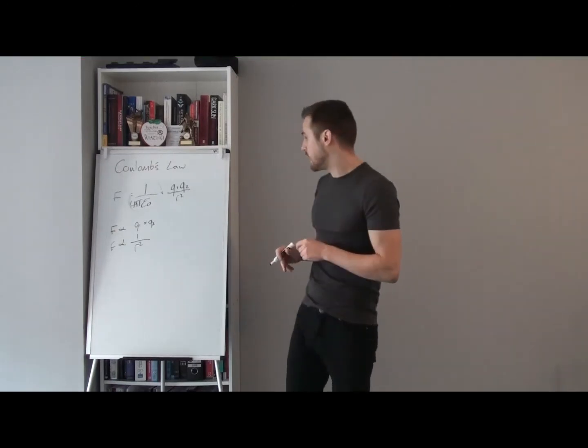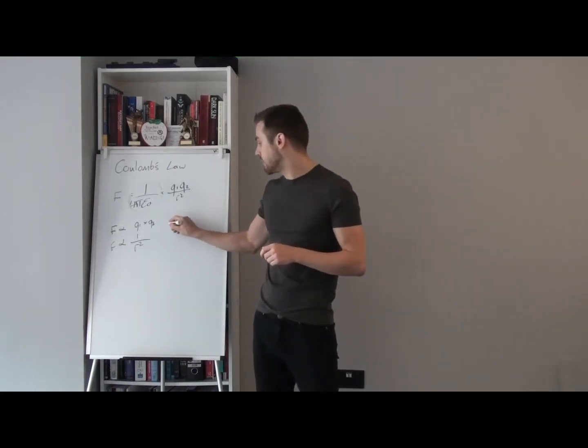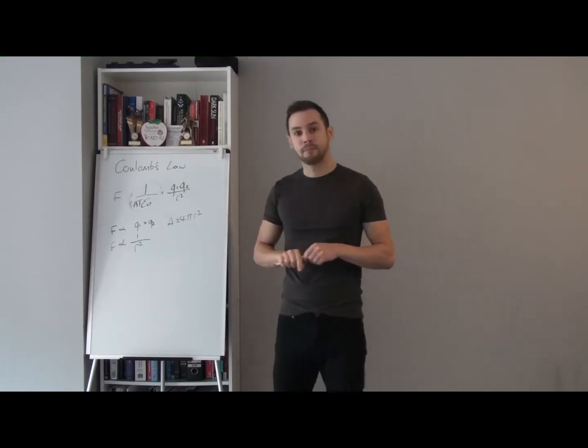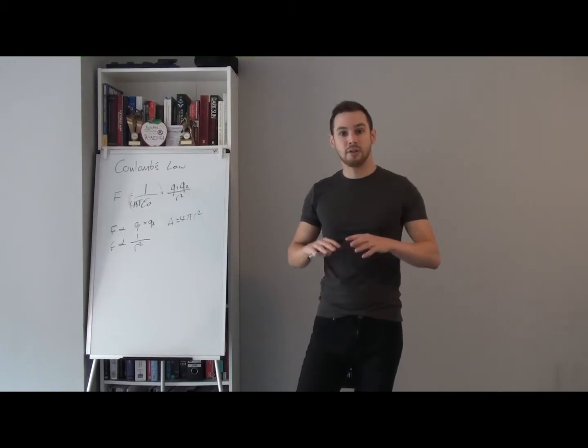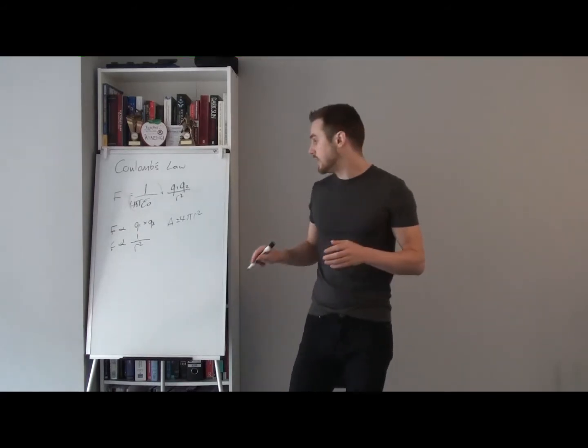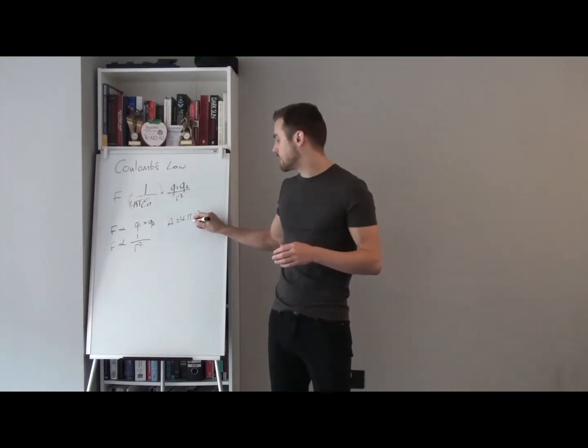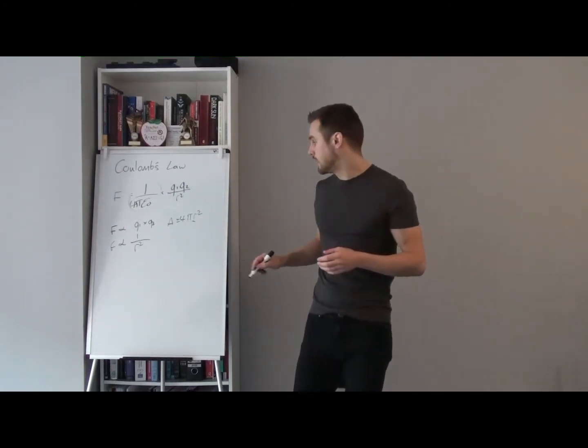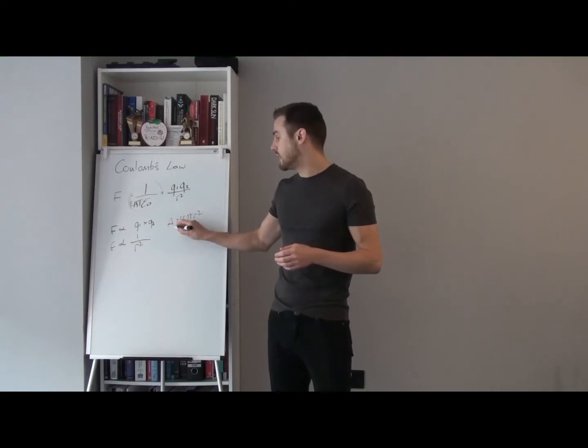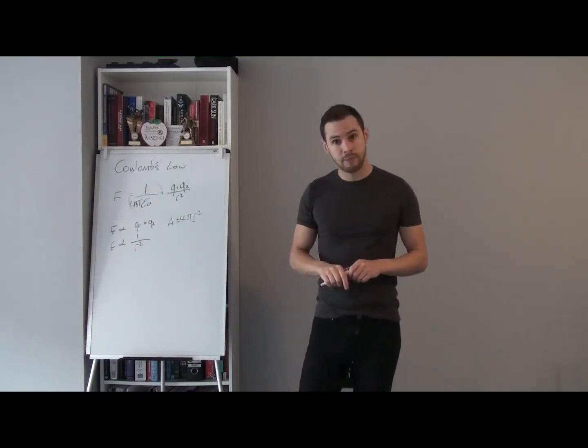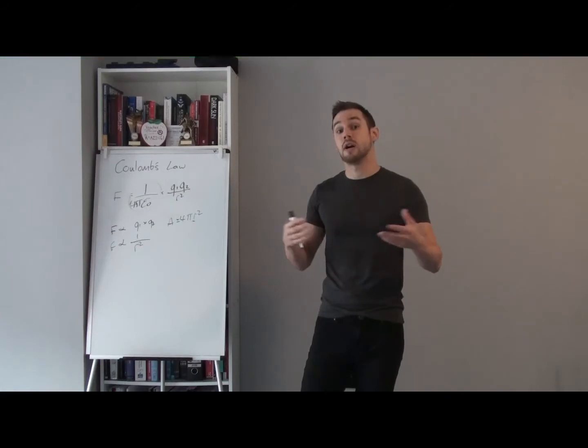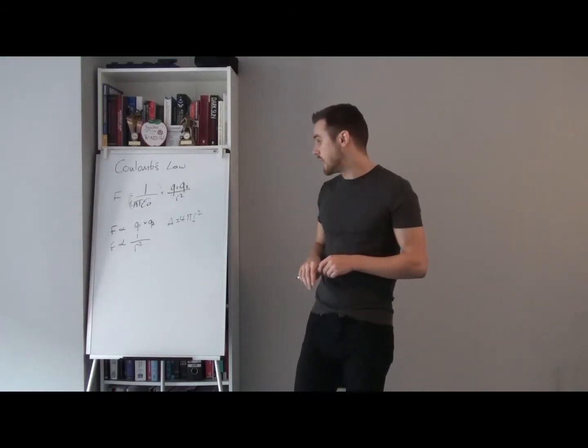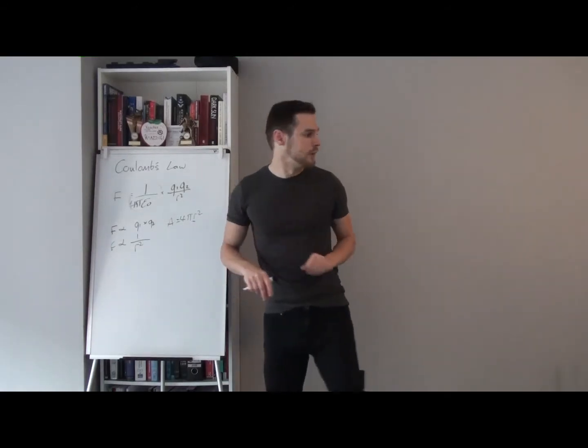So we have, for instance, the surface area of a sphere, A equals four pi r squared. And so you can imagine those field lines spread out if the distance to that sphere, or from that sphere, gets twice as big. The actual area of that sphere gets four times larger. And so, as a result, those field lines are all four times further apart. So we have an inverse square law.